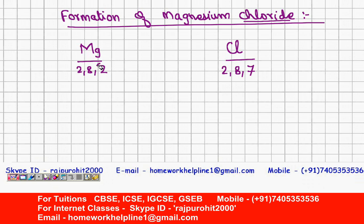Now magnesium can give 2 electrons in order to make the octet state, so that there are 8 electrons in the last orbit. But chlorine can take only 1 electron to make 8 electrons. So in this case there will be 2 chlorine atoms.